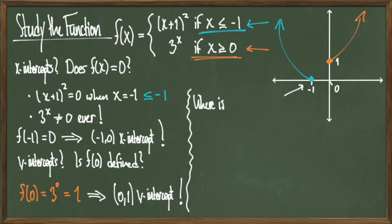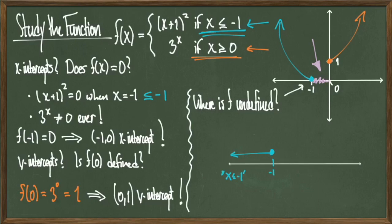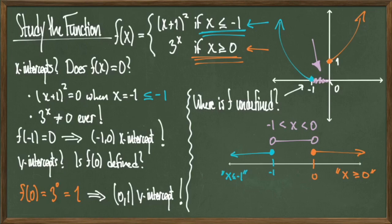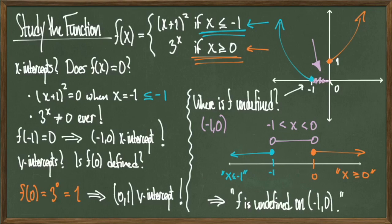Now let's address the gap in this function — the best way to say that is: where is this function undefined? I'm going to map out my x-axis as a number line and put all of my information there. I know that my function is defined when x is less than or equal to negative one, and when x is greater than or equal to zero, but I've got this hole in the middle, which turns out to be negative one less than x less than zero. I can draw a horizontal line and make open circles around those endpoints. Translating this into interval notation looks like the open interval from negative one to zero. Therefore, f is undefined on the open interval from negative one to zero. Often when presented with a piecewise function, you'll be asked questions like this — where is it undefined, does it have x-intercepts or y-intercepts — and this is basically how you tackle that. Drawing the function is very helpful.